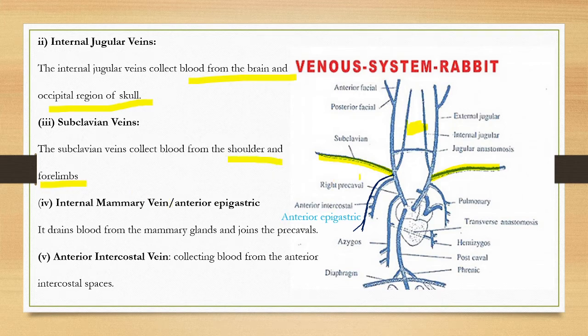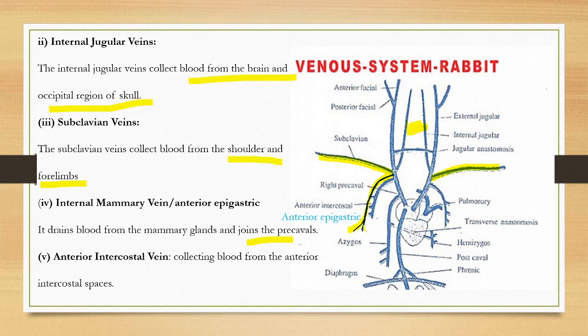There is an internal mammary vein, also called the anterior epigastric vein. It drains blood from the mammary glands and joins the precaval vein. The internal mammary vein on the right side and left side are present.